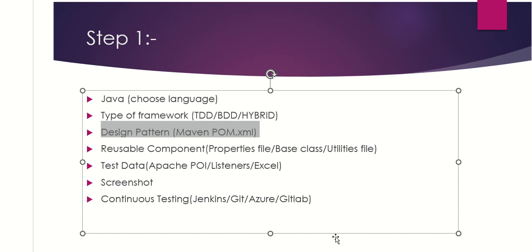For screenshots, we have used a listener in our framework to capture screenshots on any failure. These will be stored in a separate folder and added to the output report. For continuous testing we use Jenkins, and for maintaining the code we use Git. Finally, we have TestNG as our test engine — TestNG is the testing framework used to execute and manage our test cases, achieving assertion, grouping, and parallel execution.